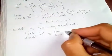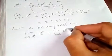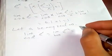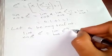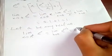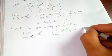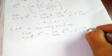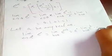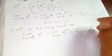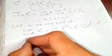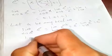As h tends to zero, this becomes e to the a plus h, which equals e to the a, multiplied by the limit as h tends to zero of e to the h, which equals e to the a.